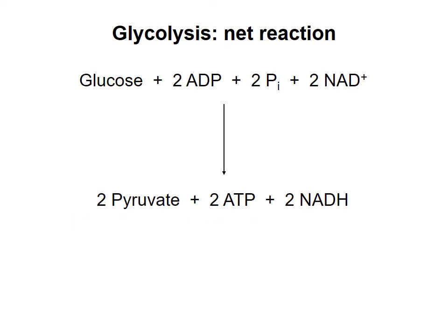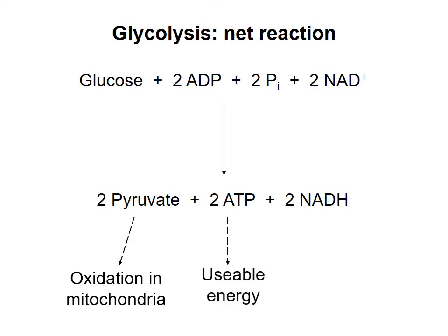What happens to these product molecules? The two pyruvates can be oxidized further in the mitochondrion in processes that allow synthesis of ATP — I'll talk about that in a future video. The two ATP molecules are useful as sources of chemical energy, and the two NADH molecules donate their electrons to molecules in the electron transport chain in a process that ultimately results in production of more ATP. A key point here is that glycolysis results in production of ATP and compounds that can be used to make ATP.